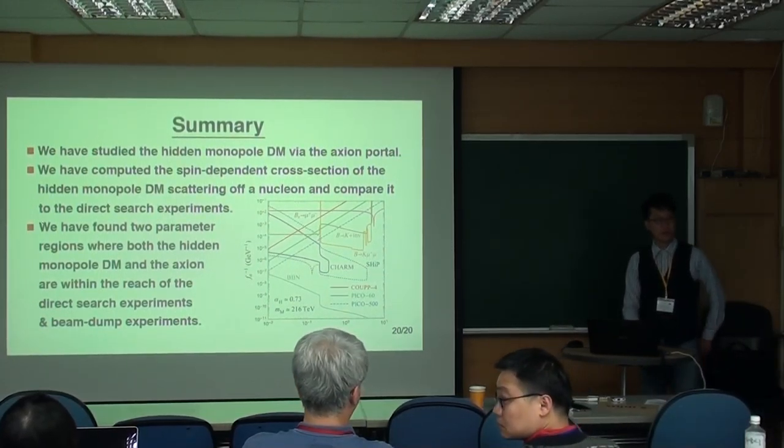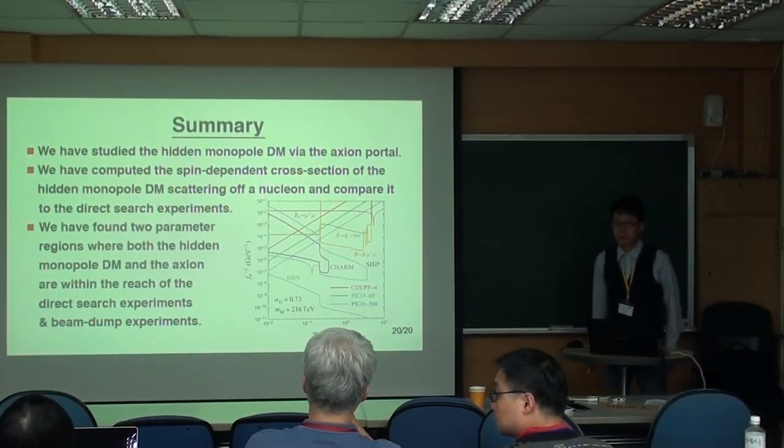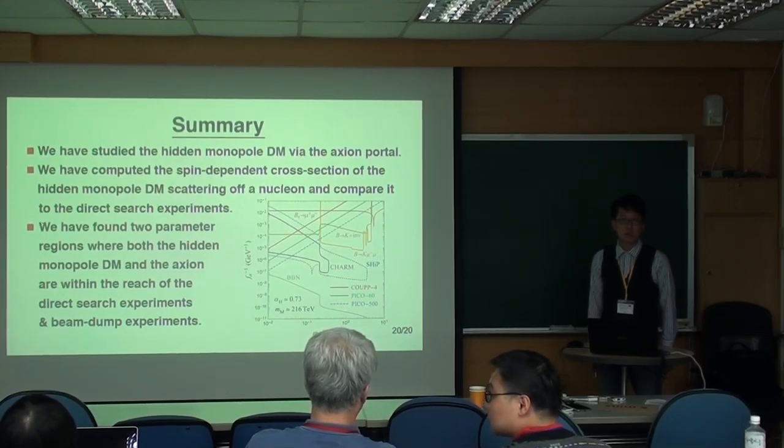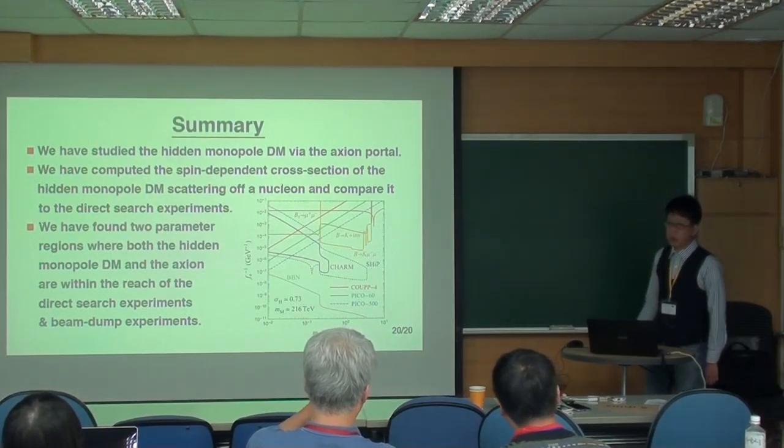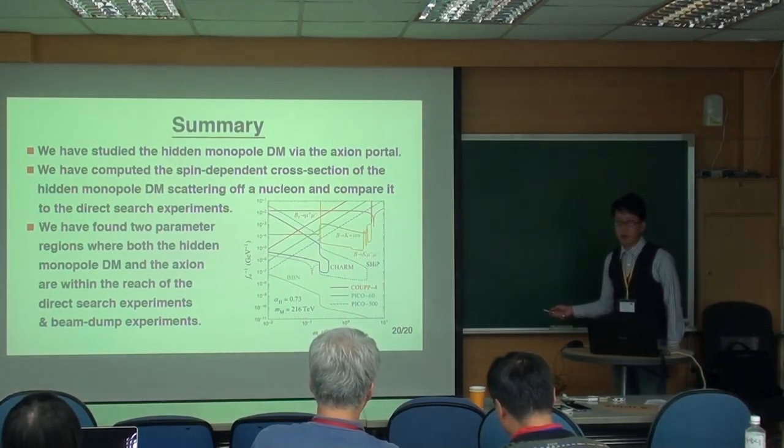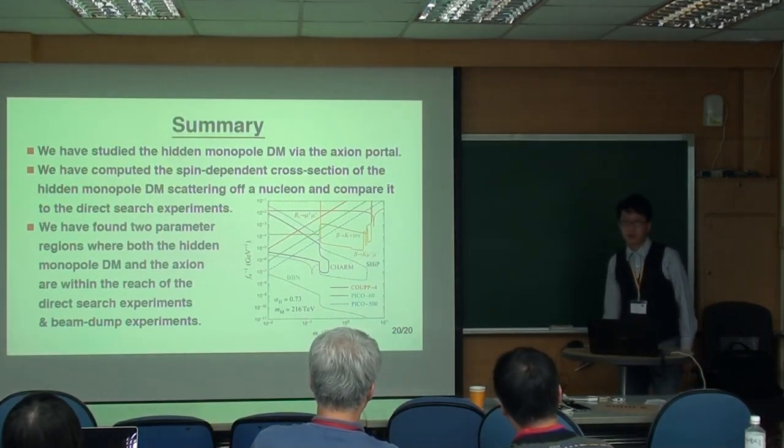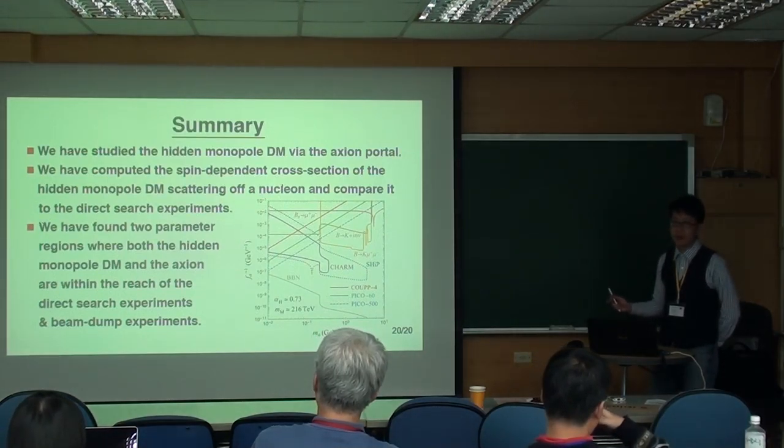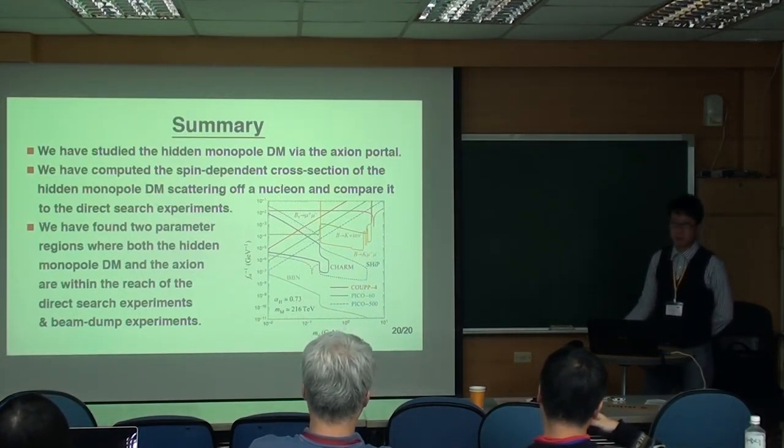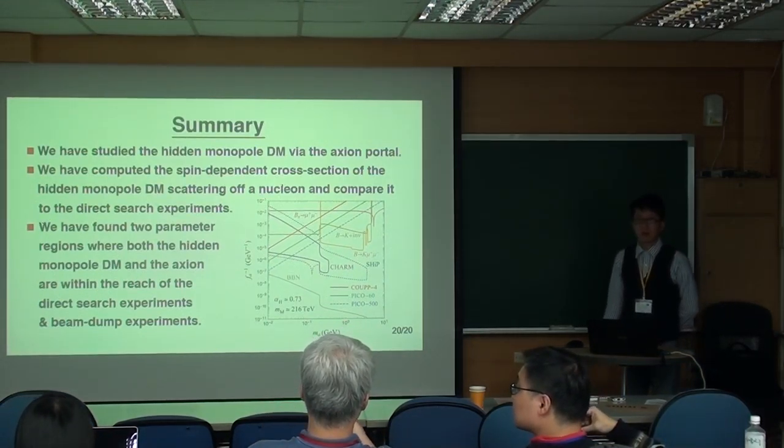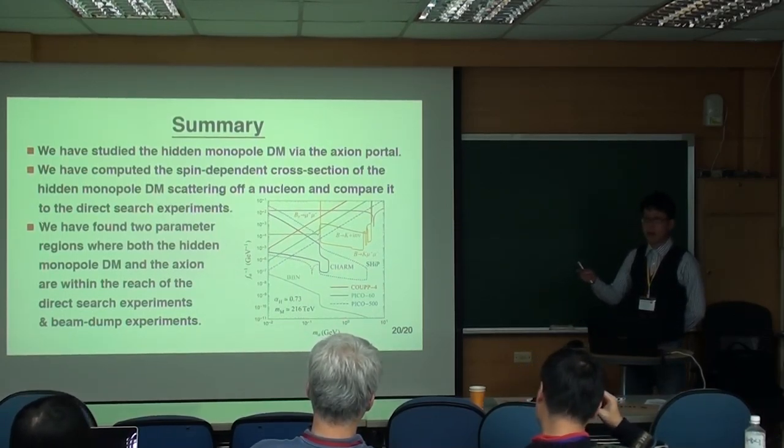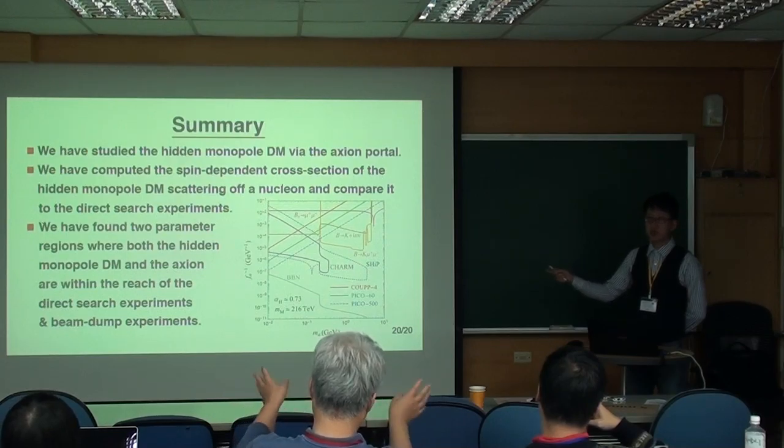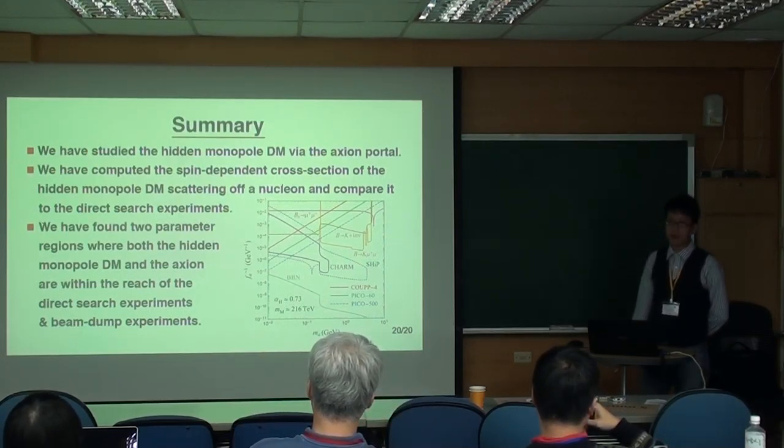Any questions? The hidden photon must contribute to the dark matter relic abundance of the universe? Yes. How much? Yeah, our relic estimates at about 0.5 to 0.6. That's about 0.5? 0.5? I think that's only the axion? Sorry? Yes, because the axion decays into the hidden photon. So it will contribute to the dark matter relic abundance.